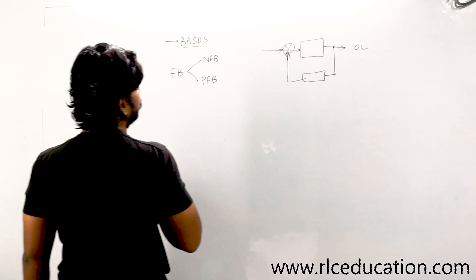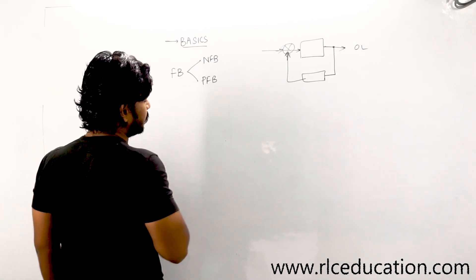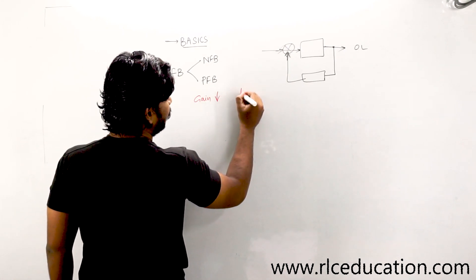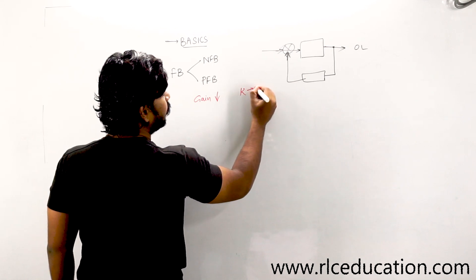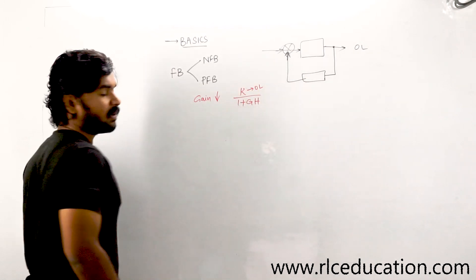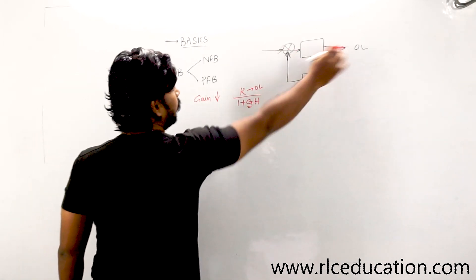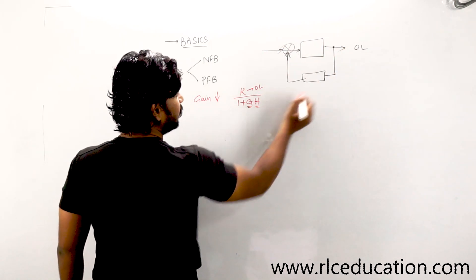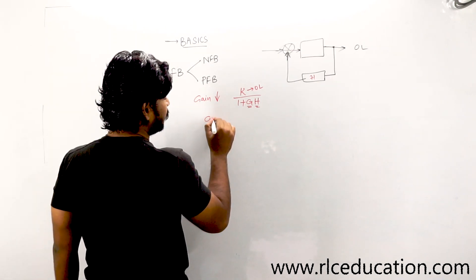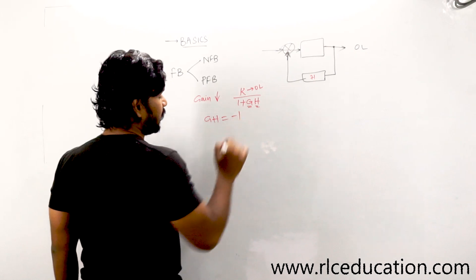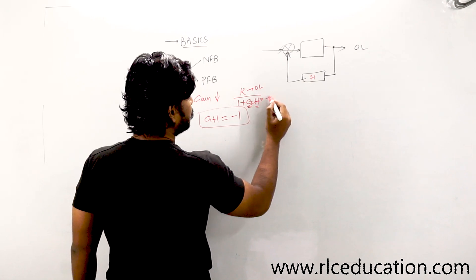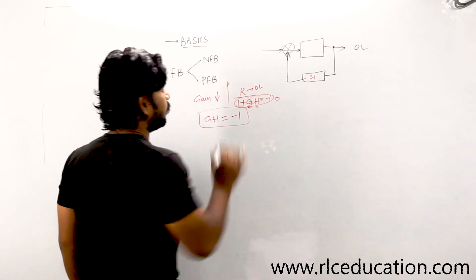We need to understand the characteristics of a negative feedback system. Due to negative feedback, the gain of the system decreases. Let's say K is the gain in the open loop system. In the closed loop system, the gain will be given by K divided by (1 + GH), where G is the forward path or open loop transfer function and H is the feedback loop gain. So if you make GH equal to minus 1, the denominator becomes zero and the gain goes to infinity — the system is driven into instability.